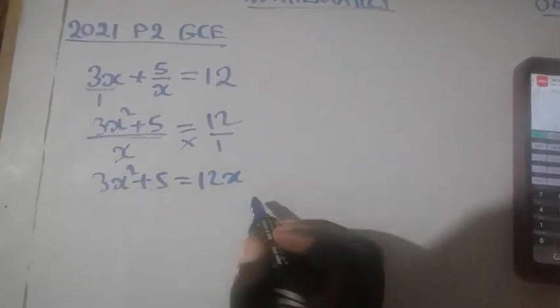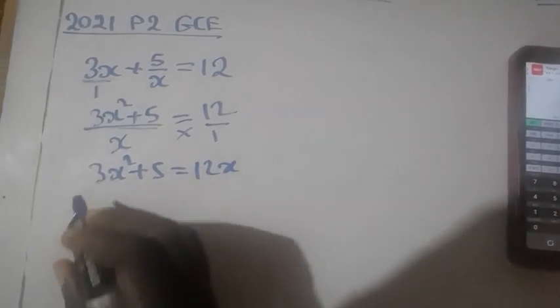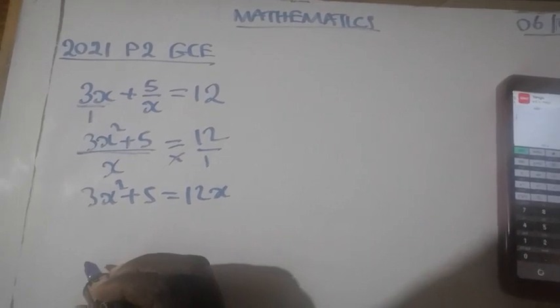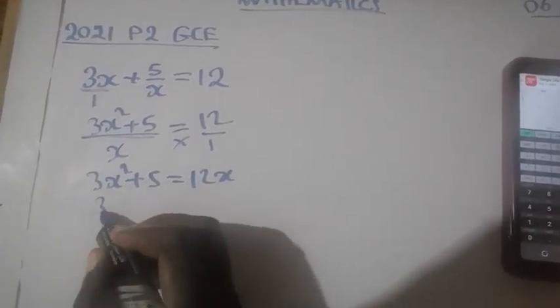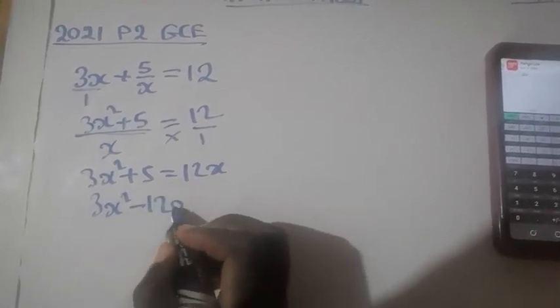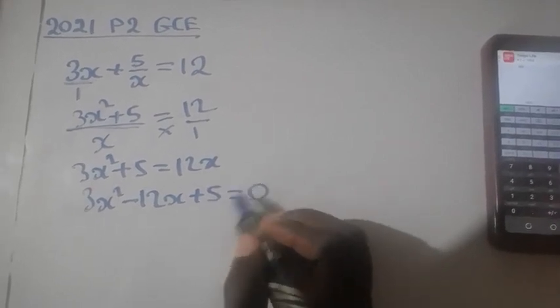So at this stage we have to group the terms to one side so that we can apply 0 product rule. This one will be 3x squared minus 12x plus 5 equal to 0.